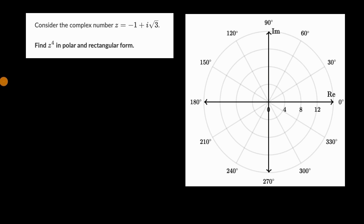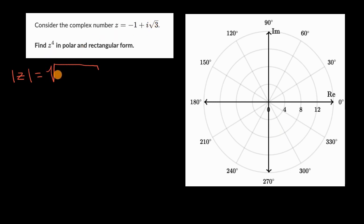First, let's think about what the modulus of z is. We know the modulus is going to be equal to the square root of the real part squared plus the imaginary part squared. So it is negative one squared plus square root of three squared, which equals one plus three — the principal root of four, which is equal to two.